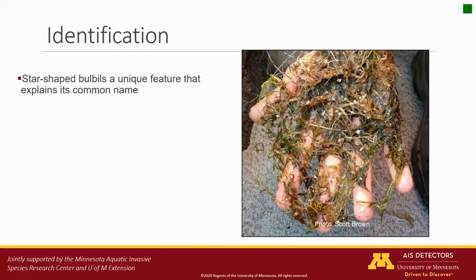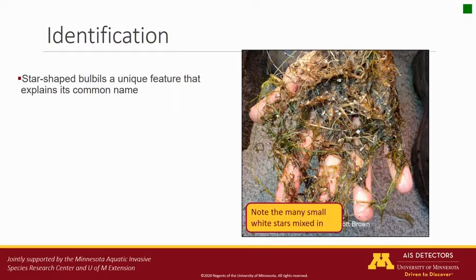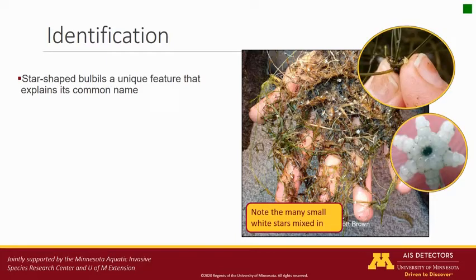Whitish bulbils do occur in other carophytes, but star-shaped bulbils are a unique feature that gives this species its common name. These may not always be present throughout the season, or may occur mostly in the sediment. Note the many small stars mixed in with this handful of starry stonewort. Closer images give a sense of the scale of these structures, and show what they look like under a magnifying glass.